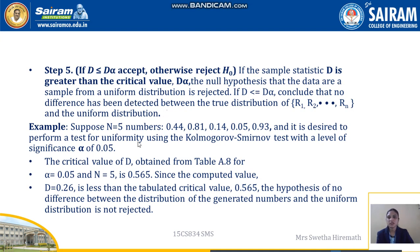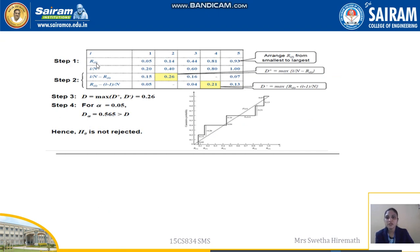This can be illustrated with an example. Suppose N = 5, with sample numbers 0.44, 0.81, 0.14, 0.05, and 0.93. We perform a uniformity test using the Kolmogorov-Smirnov test with significance level alpha = 0.05. Step 1: arrange in ascending order: 0.05, 0.14, 0.44, 0.81, 0.93. Step 2: find D+ and D− values. Step 3: the maximum of D+ and D− gives D = 0.26.